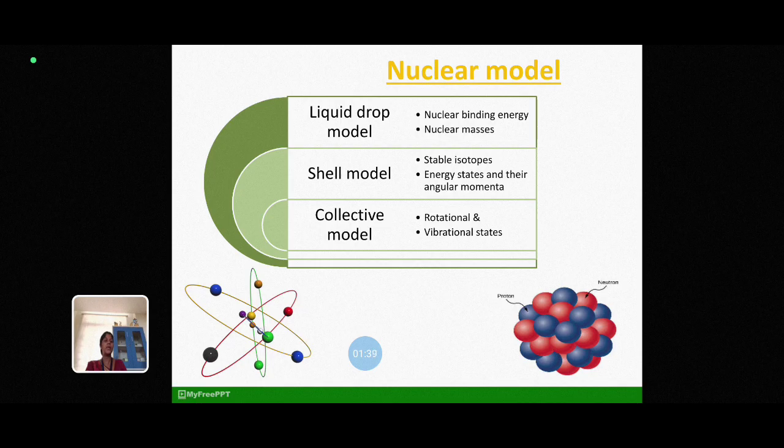first one is liquid drop model that accounts for examining the nuclear binding energy and nuclear masses. The second one shell model which accounts for the existence of stable isotopes, energy states and angular momentum. At last, the collective model includes the rotational and vibrational states of the nucleons.